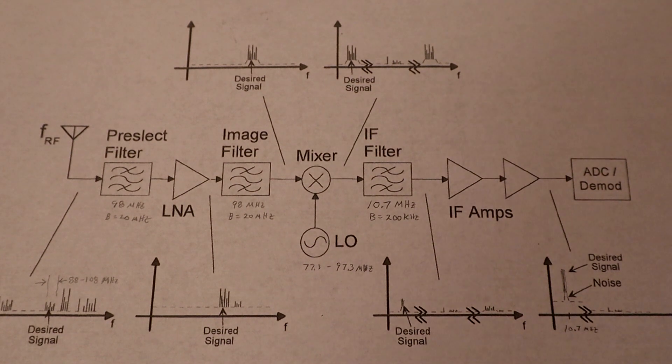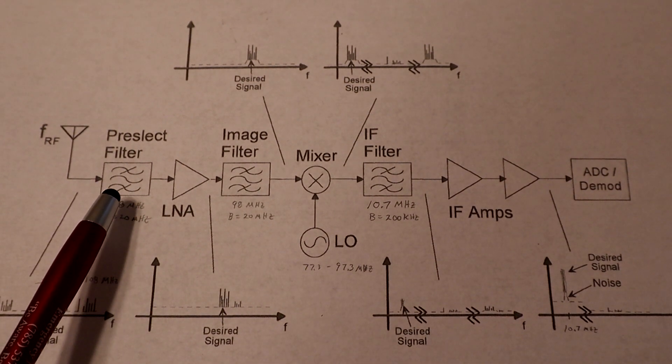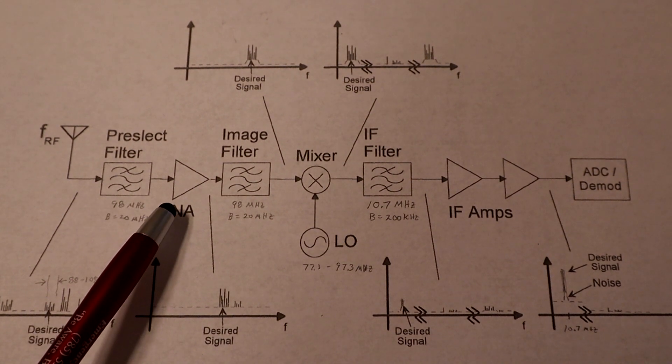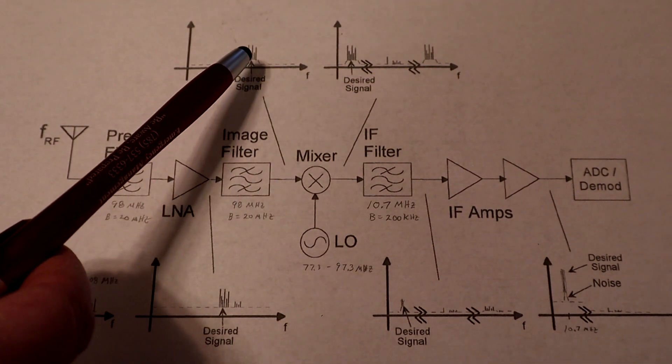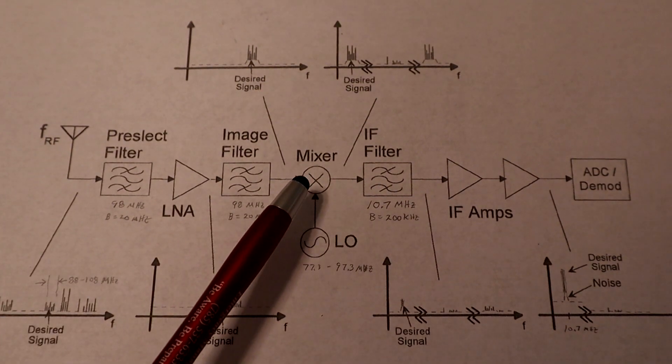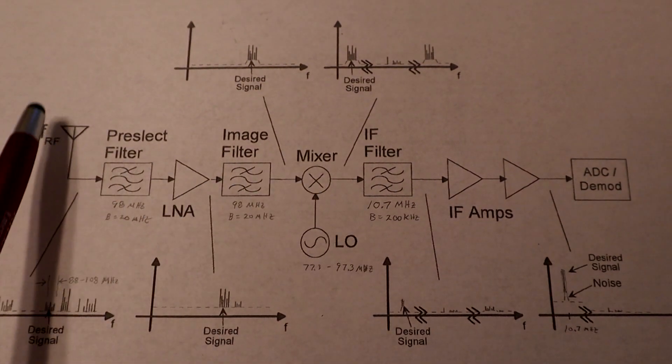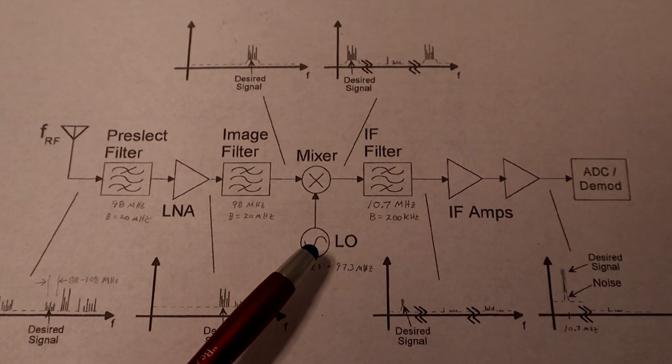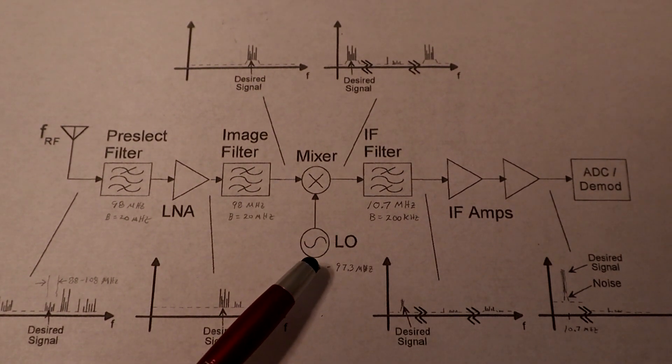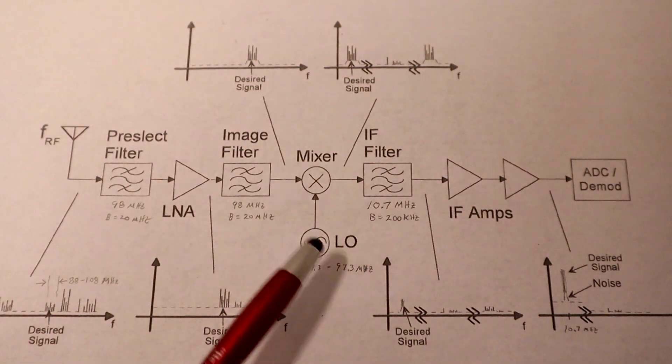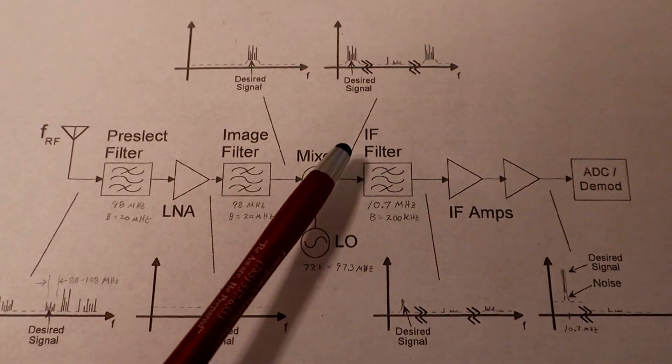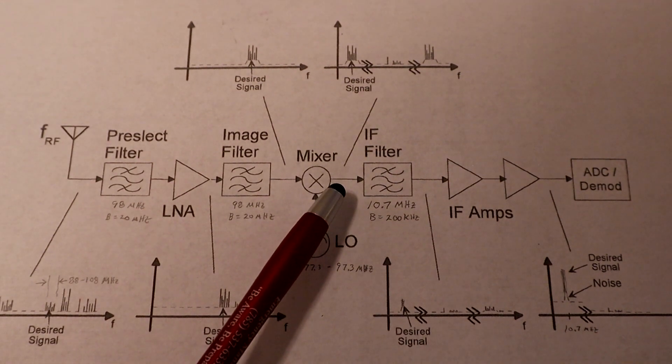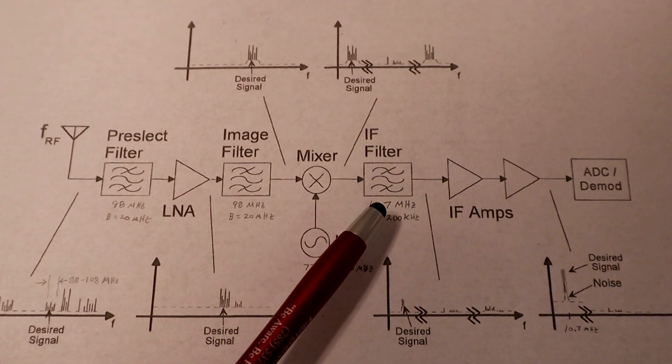So what's the rest of this block diagram? This is the spectrum we had coming in. We pre-selected primarily the FM broadcast band. We saw how well that worked. We amplified it. And then the final spectrum looked like this. Then there's a mixer. It takes the high frequencies. We'll call this nominally 100 MHz. It mixes it with a slightly lower frequency. 77 to 97 MHz. And that drops the signal down to a frequency in the 10 MHz range. Then there'll be an IF filter.